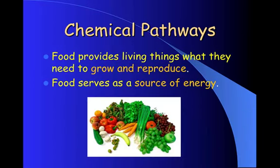Chemical pathways. Food provides living things what they need to grow and reproduce. Food serves as a source of energy. If you remember, autotrophs get their energy from the sun. Heterotrophs have to consume their energy, which means we get our energy from food.